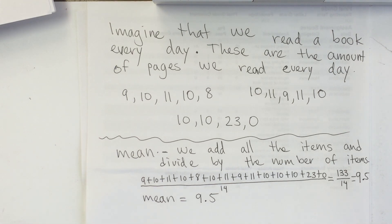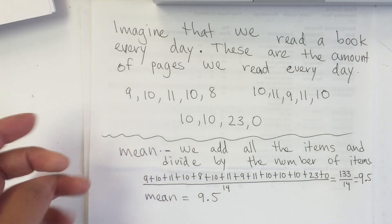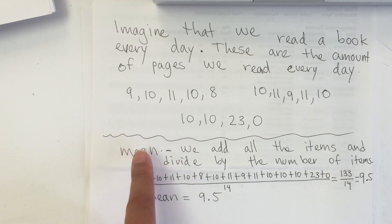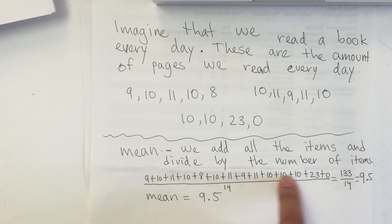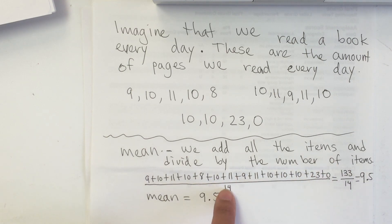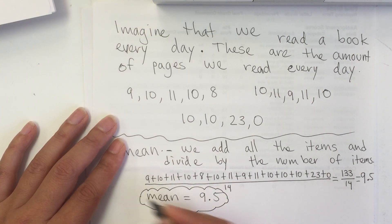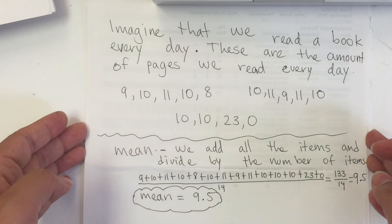People say they always learn the mean, median, and mode but always get them confused. One trick is that mean sounds like 'meanie,' right? You can think of the mean as being the meanest because it makes you do the most work — you have to add each item and then divide by 14. It makes you work so much, so that's why it's so mean.